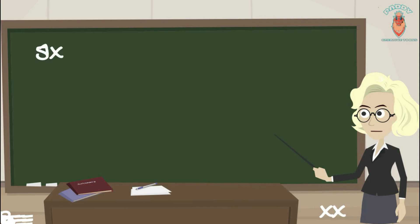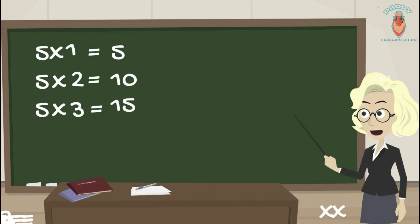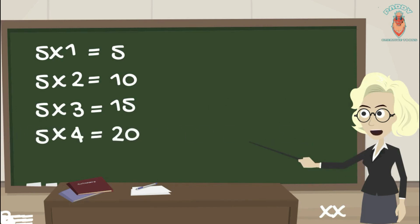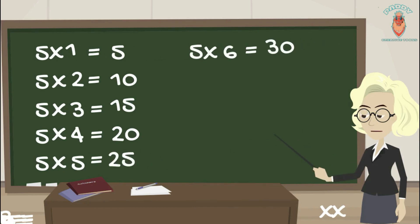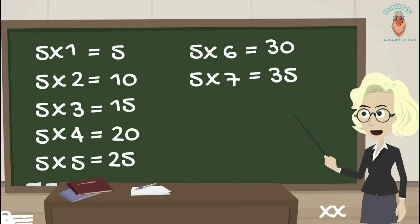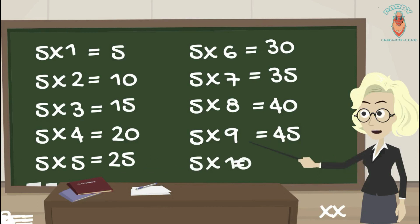5 1s are 5, 5 2s are 10, 5 3s are 15, 5 4s are 20, 5 5s are 25, 5 6s are 30, 5 7s are 35, 5 8s are 40, 5 9s are 45, 5 10s are 50.